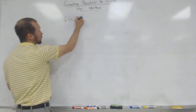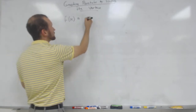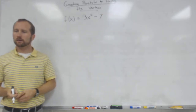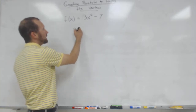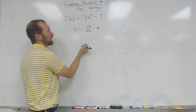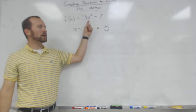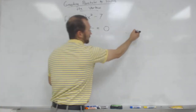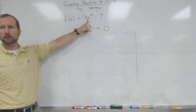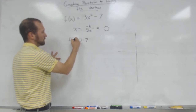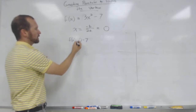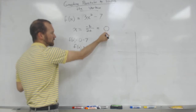Now let's do one more example that's similar to what you did yesterday: y = 3x² - 7. What's missing? There's no b term. When I find the x-part of the vertex with -b/2a, b is 0, so x = 0. That tells us the parabola is centered right on the y-axis. Then to find y, I plug 0 in: 3(0²) - 7 = 0 - 7 = -7. So the vertex is (0, -7).